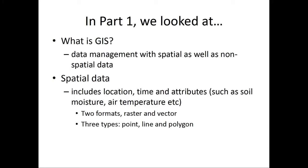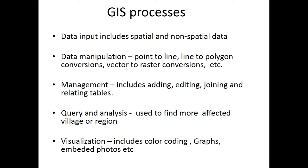Raster and vector formats are inter-convertible; they could be converted from one to another. There were three types of data: point, line and polygon, which are also inter-convertible. In effect, GIS processes include the following. First is data inputs, which includes spatial and non-spatial data. Data manipulation covers point to line, line to polygon conversions, and vector to raster conversions.